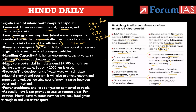The navigable potential in India with respect to inland waterways is about 14,500 km. Europe has 37,500 km of navigable waterways. But in India, out of 14,500 km, only 2,000 km has been used so far.